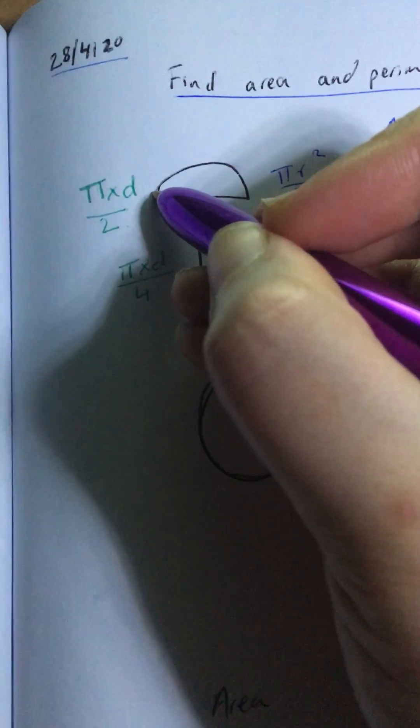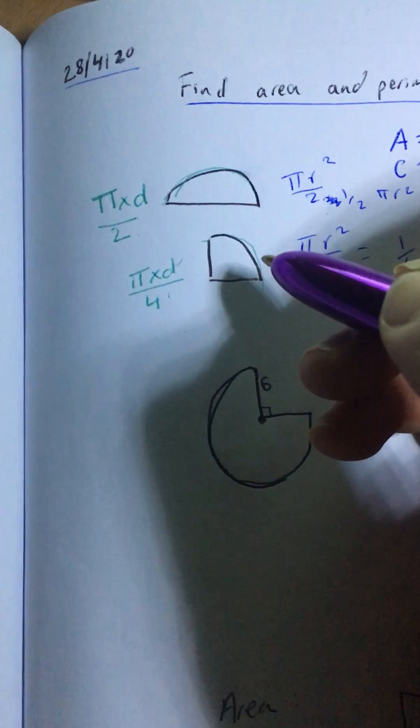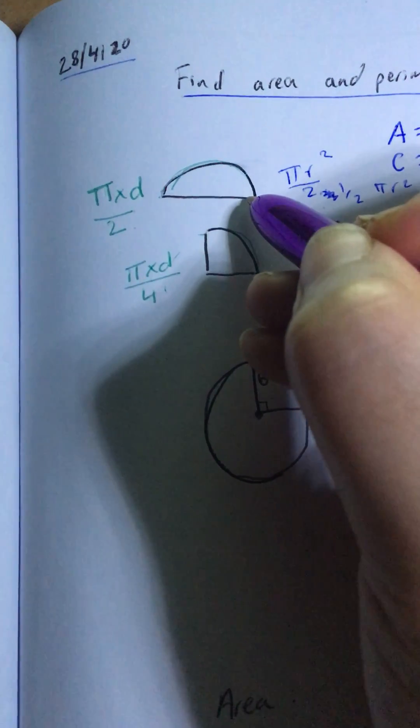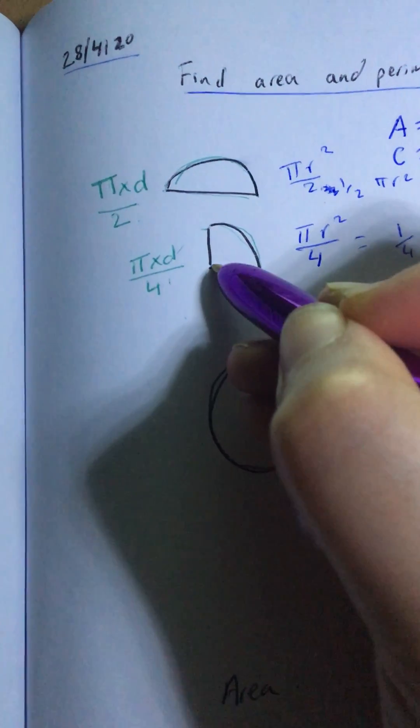Now, this only gives me the perimeter of this curve. If they asked you to find the perimeter of the whole shape, you would then have to add that diameter. And for this shape, you'd find this curve, and then you'd add up these two radiuses.